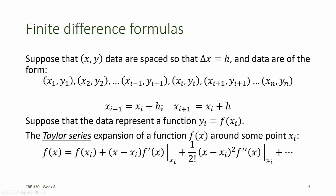Earlier we used the Taylor series expansion to approximate a value of f of x near a point xi, in the case where f was differentiable so we knew its first derivative, second derivative, and so on. In this case we're going to work backwards, and instead of solving the Taylor series expansion to find f of x, we're going to solve the Taylor series expansion to find the derivative f prime of x, or a second derivative f double prime of x, and so on.